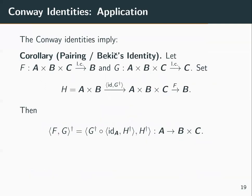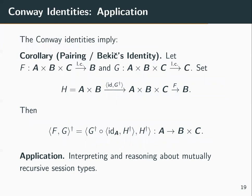A useful consequence of the Conway identities is the pairing identity, sometimes known as Bekič's identity, which gives us a way of solving systems of parametrized equations — working a bit like Gaussian elimination, solving equations one by one and substituting results through the rest of the system. Bekič's identity is very useful for interpreting and reasoning about mutually recursive session types.